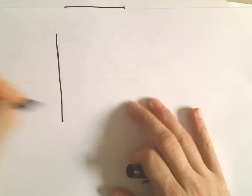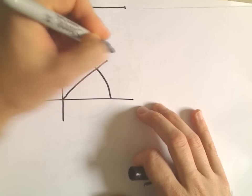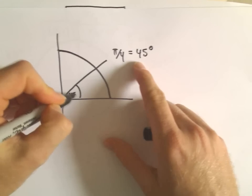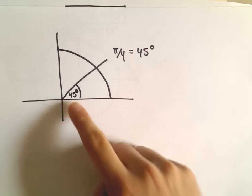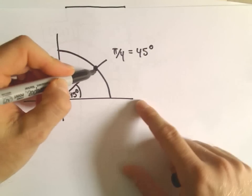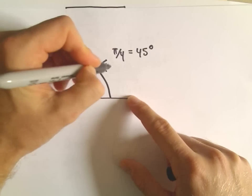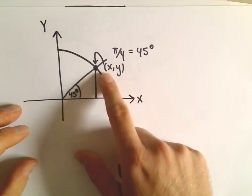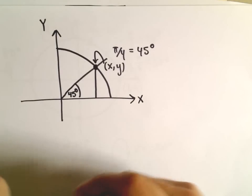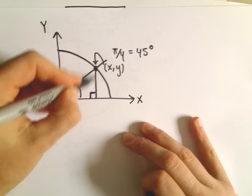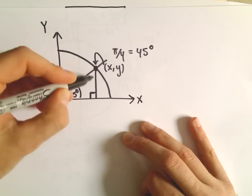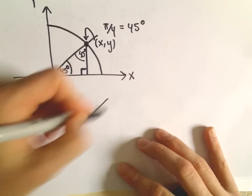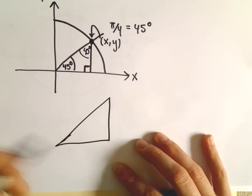Let's draw the first quadrant one more time. At π over 4, 45 degrees — when we say this is 45 degrees, we mean this little angle between the ray and the positive x-axis has a measure of 45 degrees. I'm going to make a little right triangle based on this. We're sitting at some point (x, y) on the circle, and I want to figure out what those coordinates are. If I drop this down, that's going to be a right triangle. Since this angle is 45 and this is 90, all angles have to add up to 180, which means the third angle is also 45 degrees.